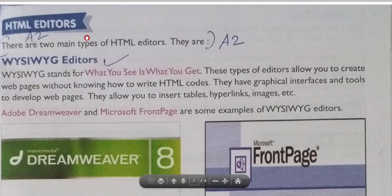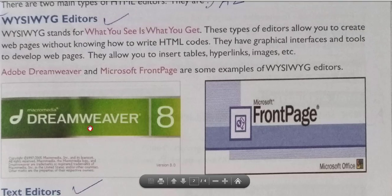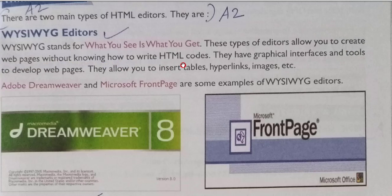Next, HTML editors. There are two main types of HTML editors: first, the WYSIWYG editor — What You See Is What You Get — and second, simple text editors. WYSIWYG editors allow you to create web pages without knowing how to write HTML codes. They have graphical interfaces and tools to develop web pages, allowing you to insert tables, hyperlinks, images, etc. If you use these editors, you don't need much knowledge of HTML codes, as they have inbuilt code support.